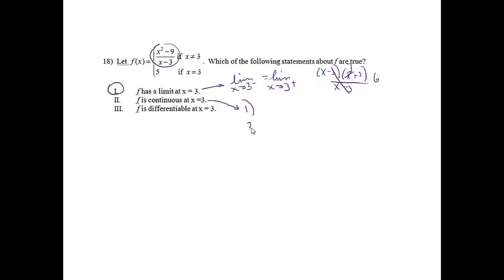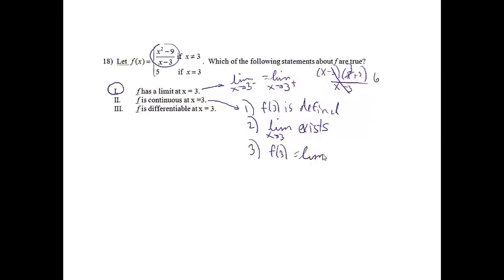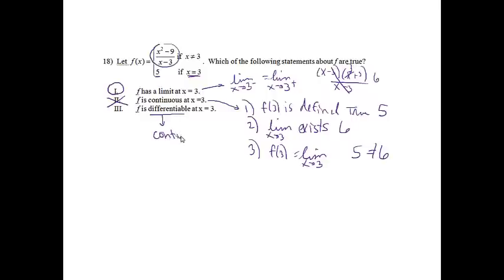For statement 2, f is continuous. The three conditions for continuity are: f of 3 is defined, the limit as x approaches 3 exists, and f of 3 equals the limit. We know f of 3 equals 5 (given by the piecewise definition), and the limit equals 6. Since 5 does not equal 6, f is not continuous, so statement 2 is false. For statement 3, f is differentiable — but differentiability requires continuity, and since f is not continuous, it cannot be differentiable. Statement 1 is the only true one.